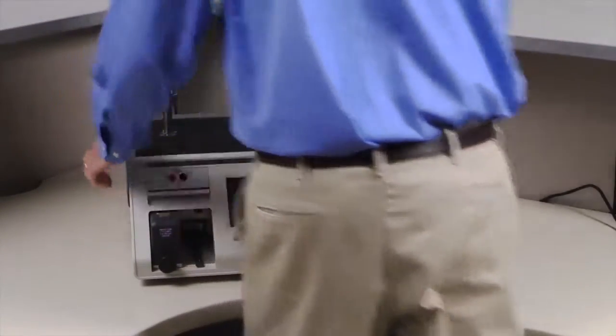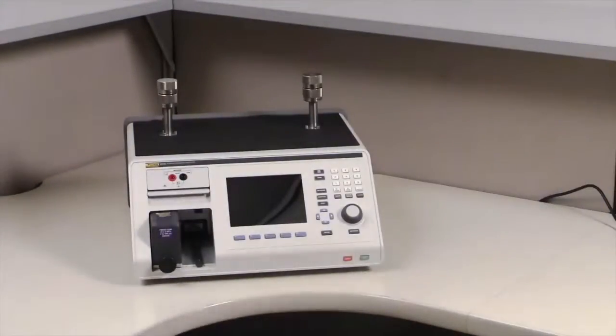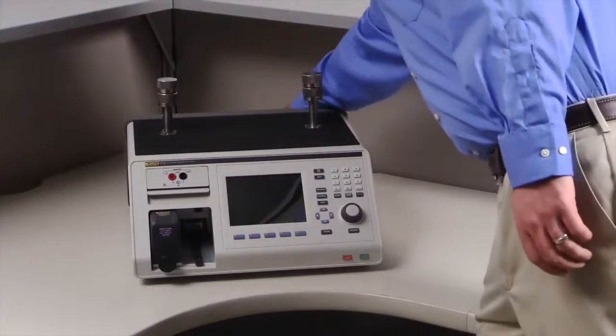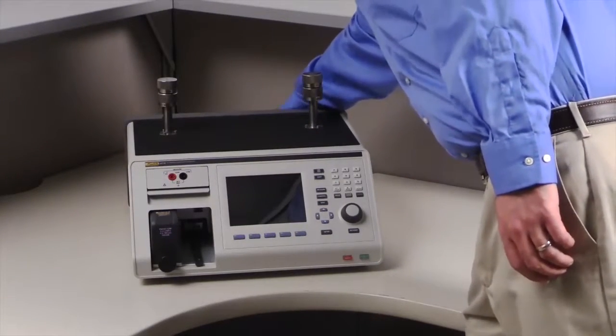The 2271A can be installed on any flat, sturdy work surface. Simply connect to a regulated supply pressure to begin controlling pressure.